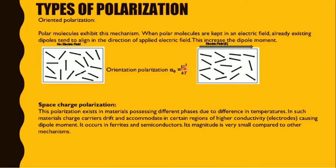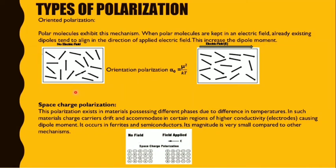Space charge polarization exists in materials possessing different phases due to differences in temperature. This polarization occurs when charge carriers drift and accumulate in certain regions of higher conductivity, causing dipole moments. It occurs in ferrites. When an electric field is applied, some charges get positioned toward the regions of higher conductivity, causing the dipole moment.